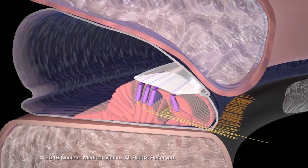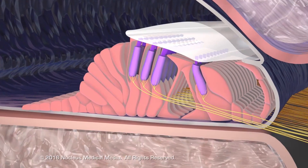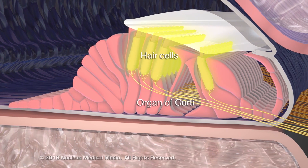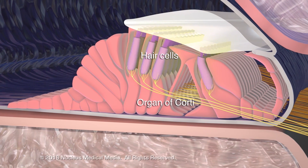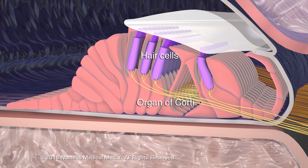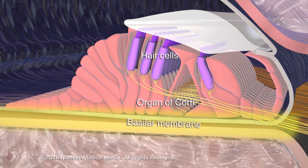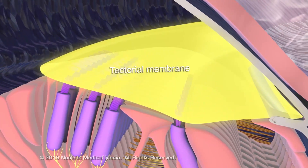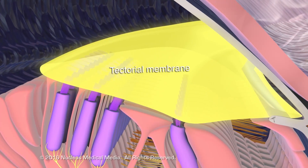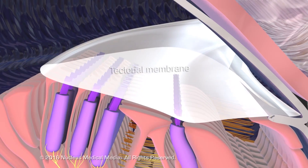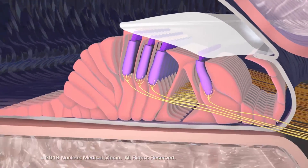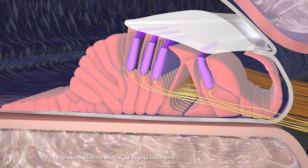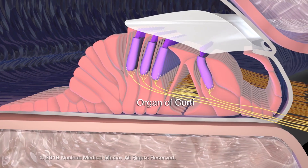Inside the cochlear duct, sensory receptor cells called hair cells line one of the walls of the duct, called the basilar membrane. The tectorial membrane covers the hair cells. Collectively, this group of structures is called the organ of Corti.